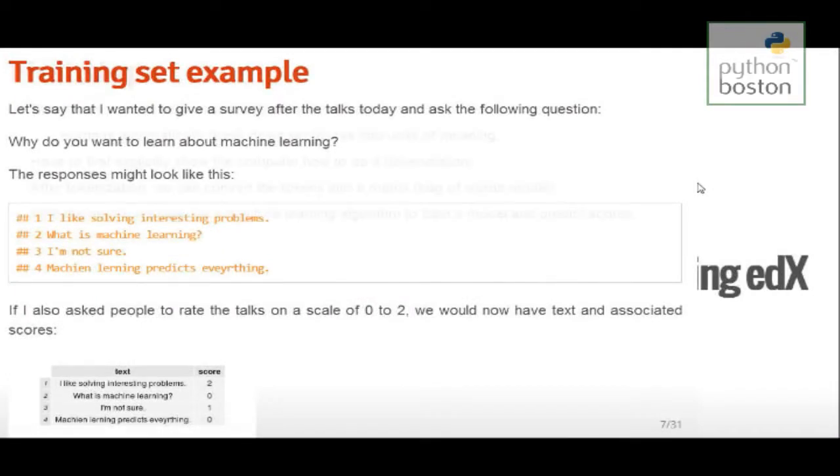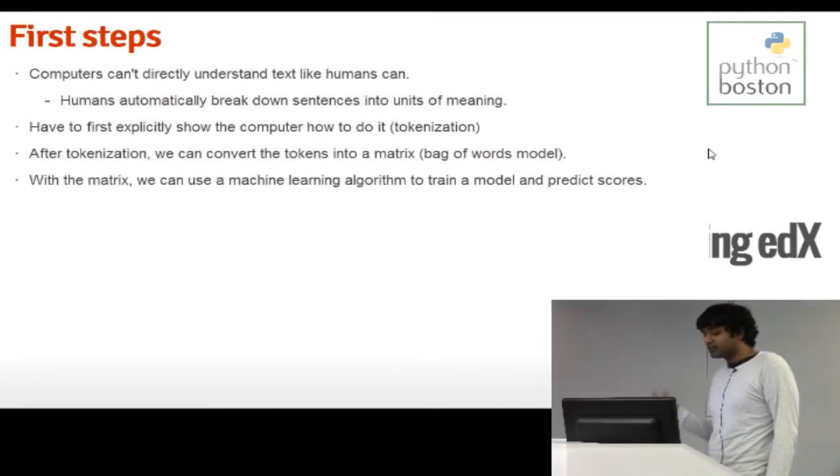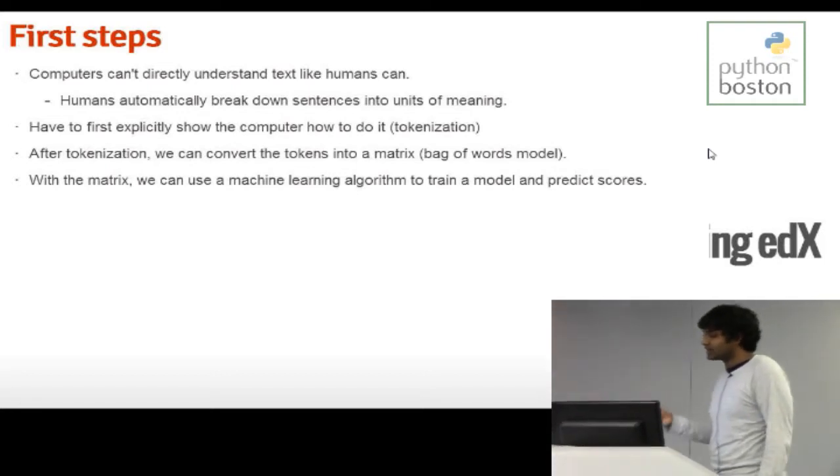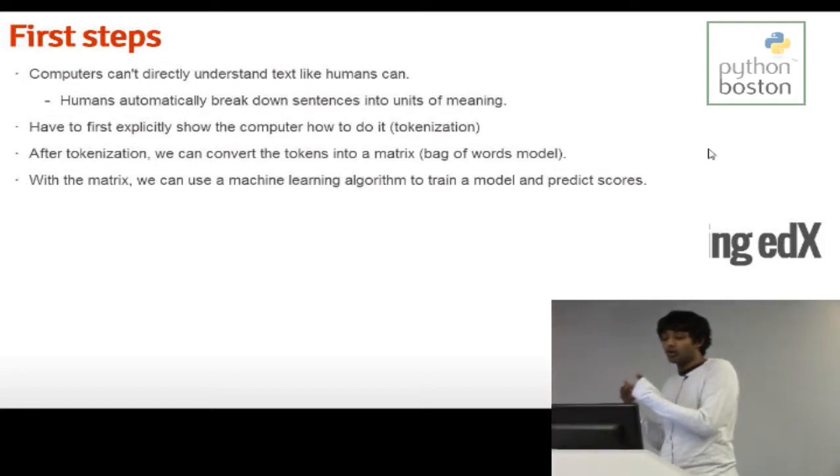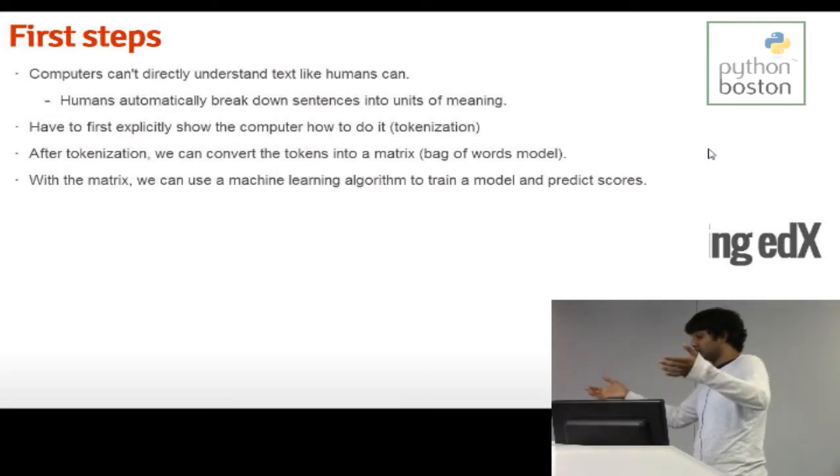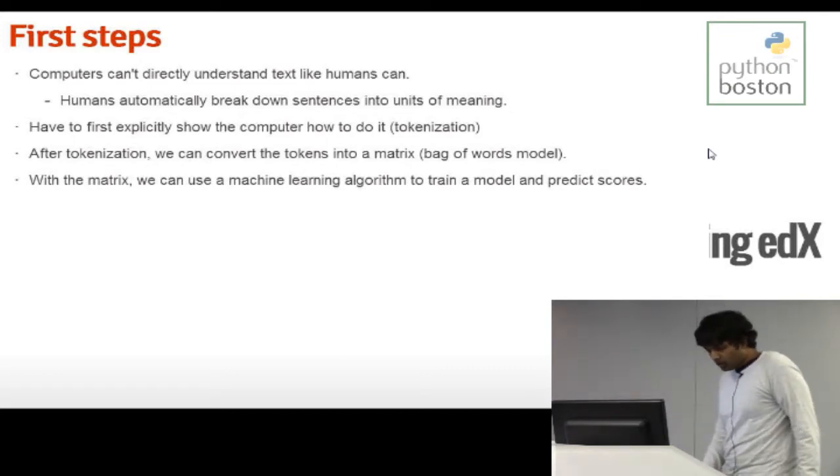So computers have some disadvantages compared to humans. I know that's tough to believe. But humans basically can look at a sentence and say, this is what that means just instantaneously. Although biologists would probably disagree with me. But basically, a computer needs to be told how to do that. So we need to teach a computer what a unit of meaning is, what that unit of meaning means, and how to put all of the units of meaning together to form a cohesive whole. So in order to do that, we need to break down each piece of text into units of meaning. Then we need to contextualize that meaning for the computer, which is putting it into a matrix. Then we need to put that into an algorithm to create a model, which is basically a miniature computer brain saying, these pieces of text, these features extracted from the text, equal this score.